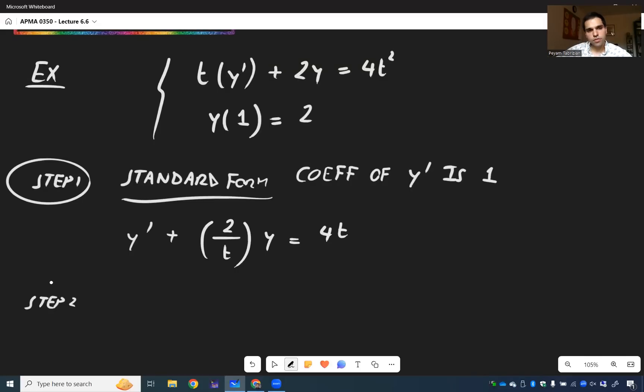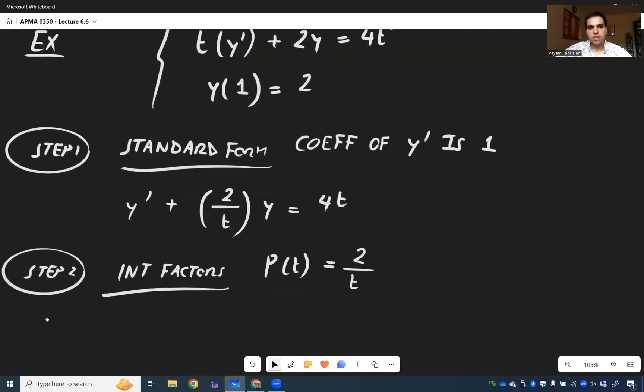Step two. Integrating factors. So in this case, p of t, so p in our expression is two over t. So let's use that. So, e to the integral of p of t dt, that is, e to the integral of two over t dt.